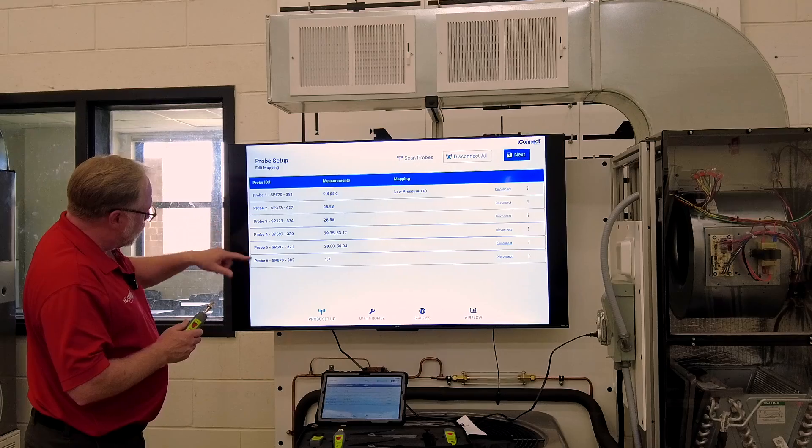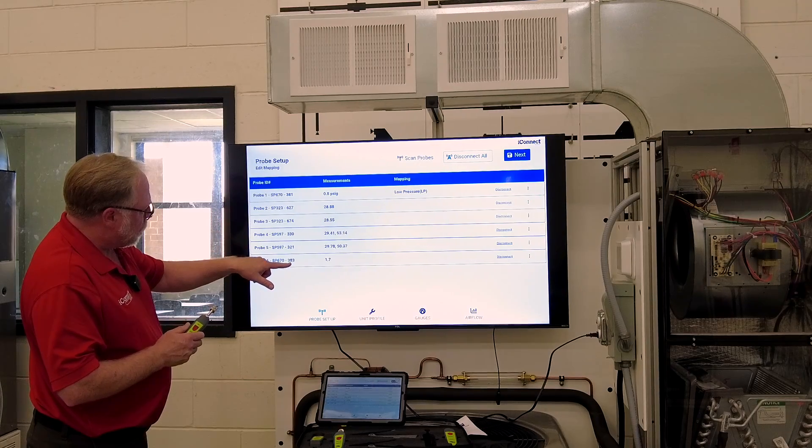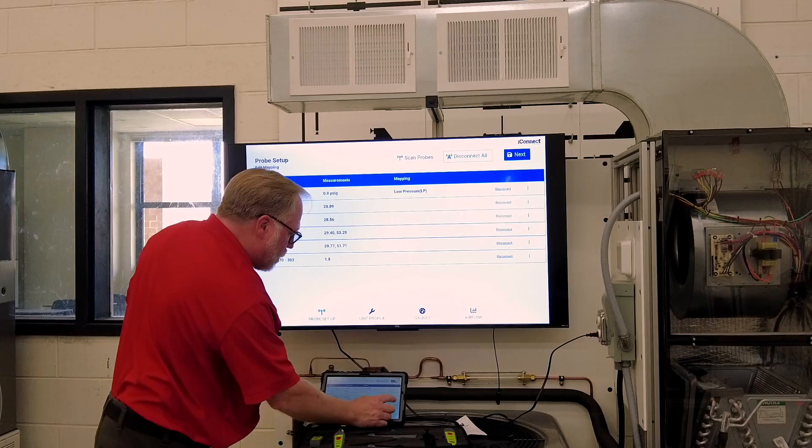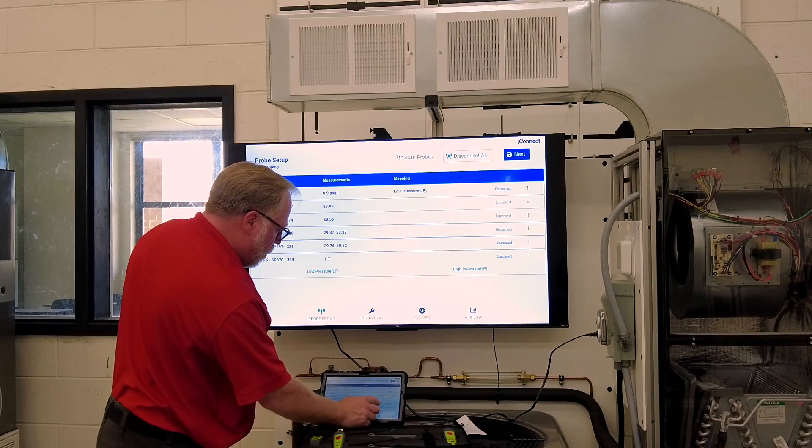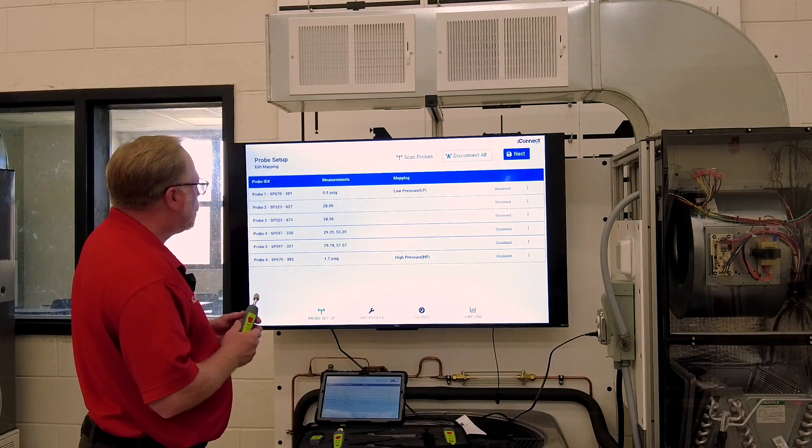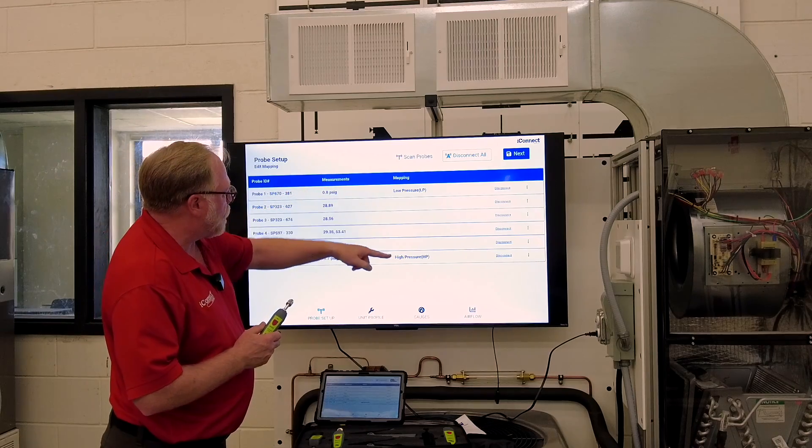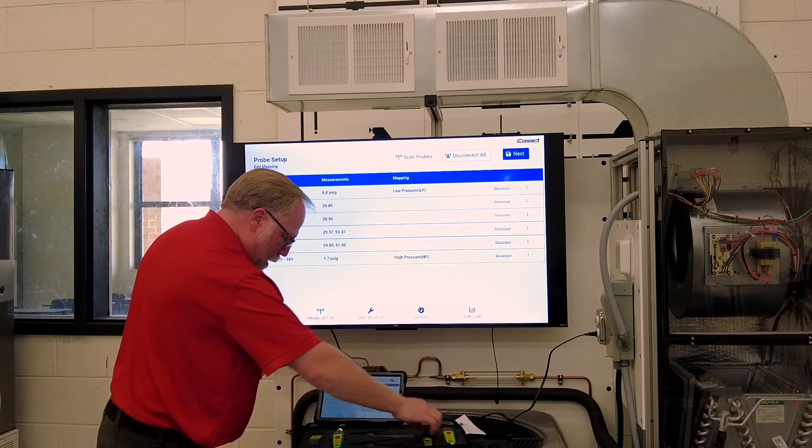Then I look for this one. This is my SP670 and this is my 383. So look down here, here's SP670, 383. So I'm going to tap these three little dots there on the right and I'm going to choose high pressure. So now I've got my low pressure mapped and I've got my high pressure mapped. I'm going to keep doing that here.